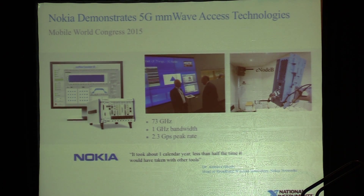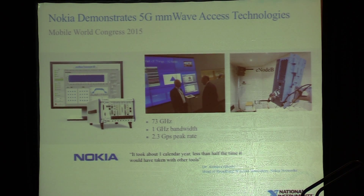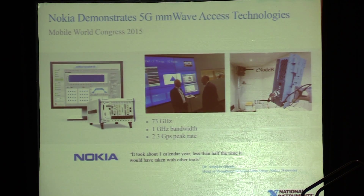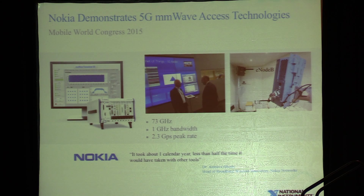Dr. Amitabha Ghosh commented that this was less than half the time it typically takes to build this kind of prototype using traditional approaches. This system was demonstrated publicly at Mobile World Congress — they had a demonstration of an emulated E-Node B communicating at 73 gigahertz to an emulated UE station. That UE station was put on a motion control system so it could move, and they demonstrated beam tracking and beam steering all performed in real time on processors and FPGAs inside the PXI system, achieving a gigahertz of bandwidth.